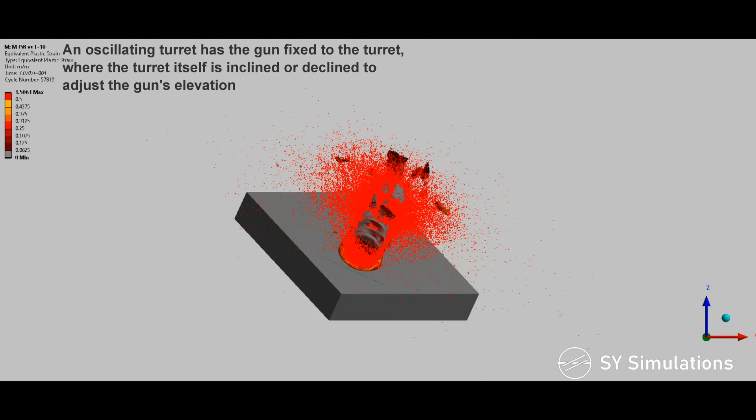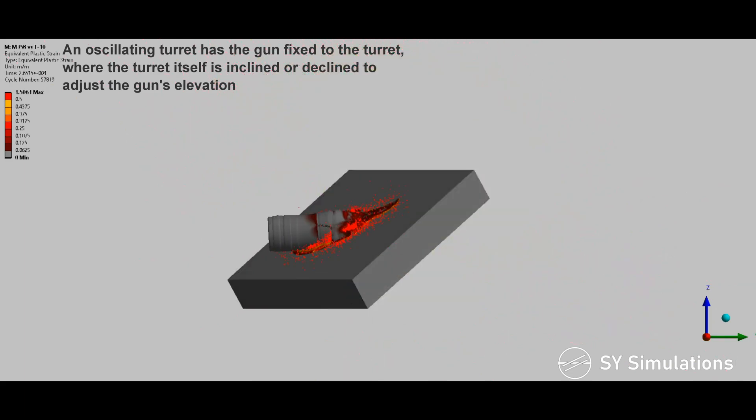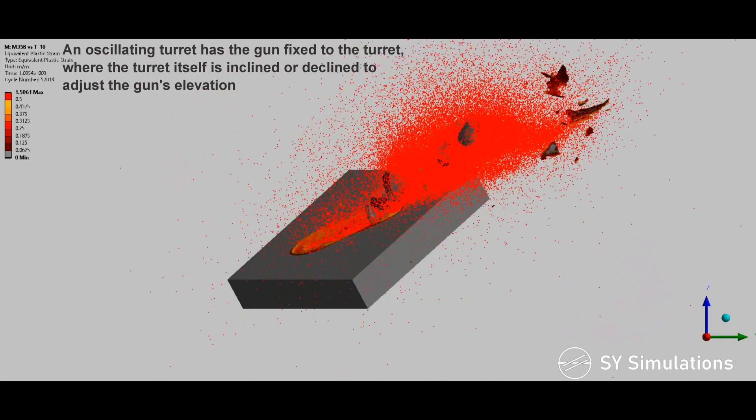An oscillating turret has the gun fixed to the turret, where the turret itself is inclined or declined to adjust the gun's elevation.